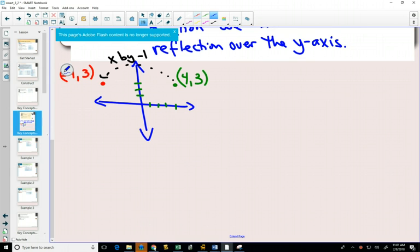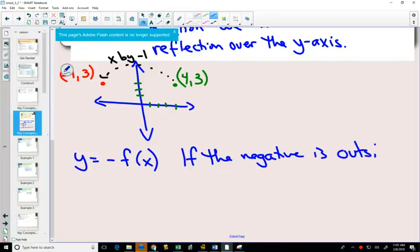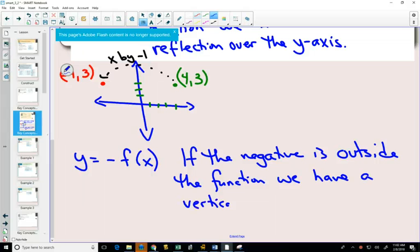Similarly, we'll add to this note, if you had y equals negative f of x, if the negative is outside the function, we have a vertical reflection over the x-axis.